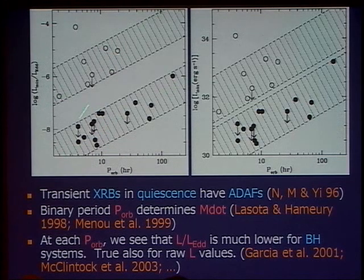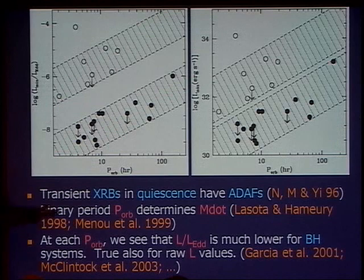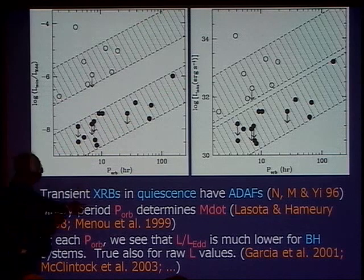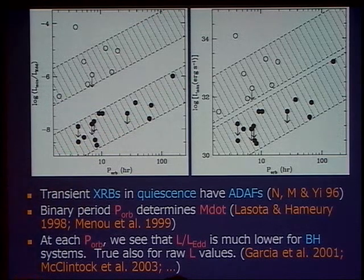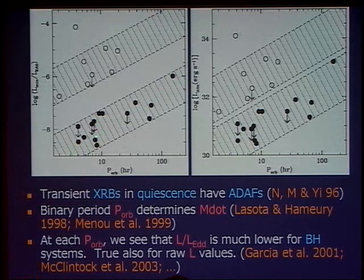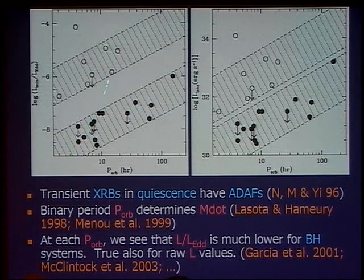The luminosity is clearly showing a trend with orbital period, and that is to be expected — these models tell you it should go like this. The normalization is hard to figure out, but once you plot it this way, we believe you are justified in comparing, in the vertical direction, any pair of objects.